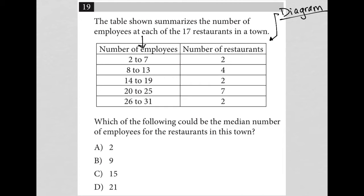So the first column here is number of employees. The second column is number of restaurants. So it looks like this is saying that there are two restaurants that have between two and seven employees, and seven restaurants that have between 20 and 25 employees, so on and so forth. I think I understand how this table is organized. Let's start reading in case I made a mistake somewhere. So it goes on to say the table shown summarizes the number of employees at each of the 17 restaurants in a town.